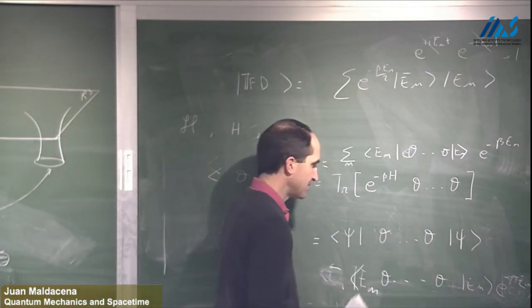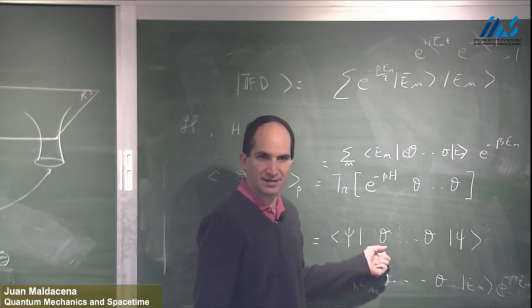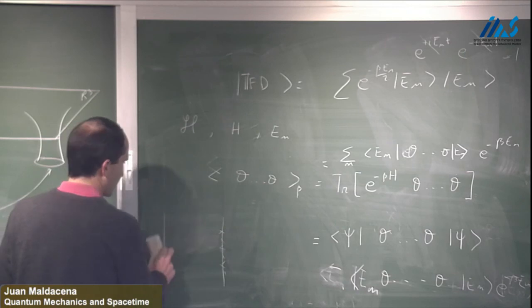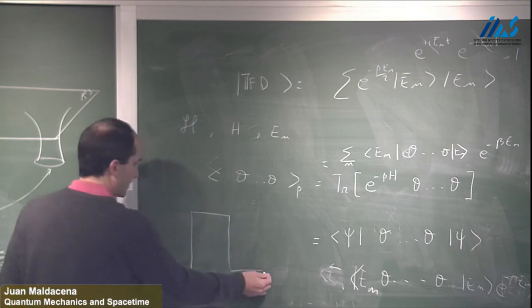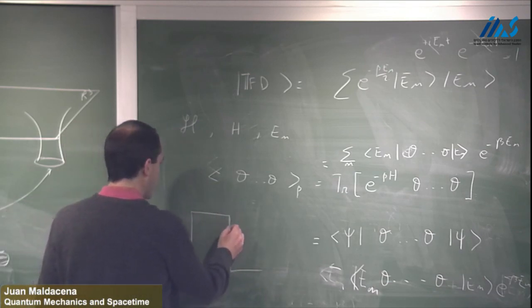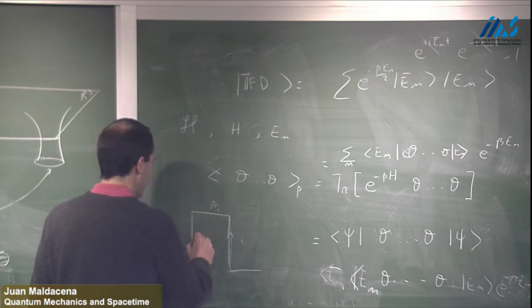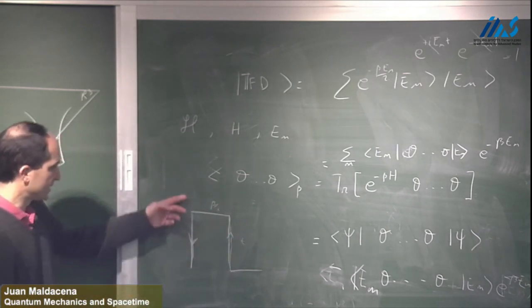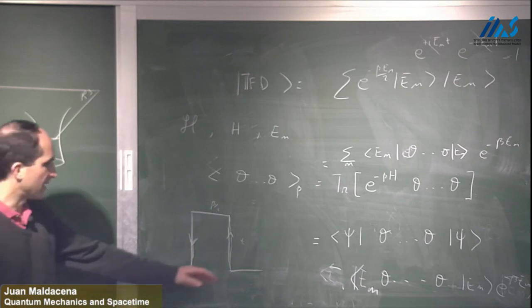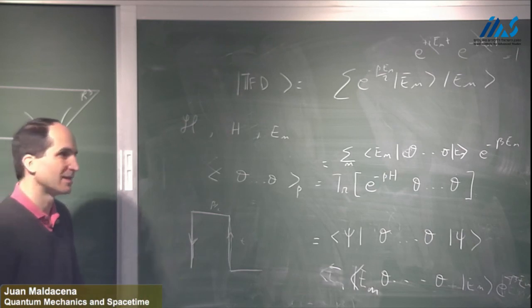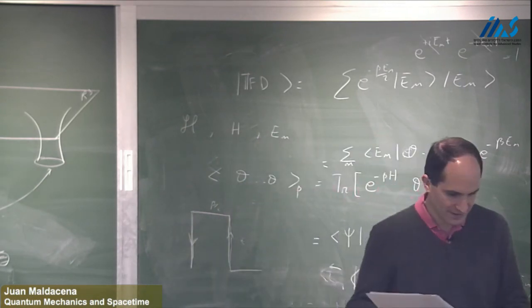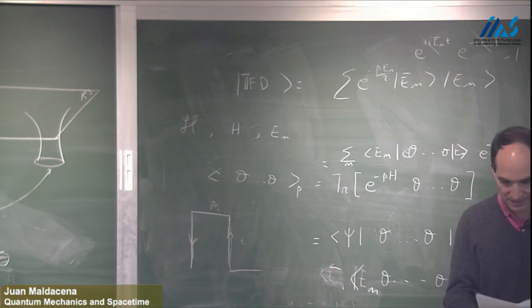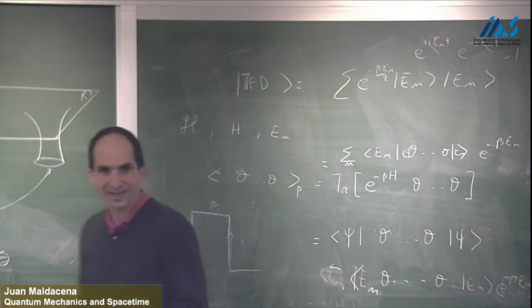The reason this representation is useful is that in perturbation theory you can apply essentially standard Feynman rules, but with a funny integration contour: evolve in Euclidean time for beta over 2, then evolve forwards in time on one side, then by beta over 2 in Euclidean time again, then evolve backwards in time on the other side, with perturbation theory time-ordered along this contour. This is the only reason why this was useful — it's a technical convenience rather than something very deep.